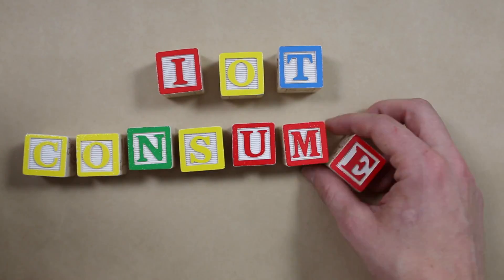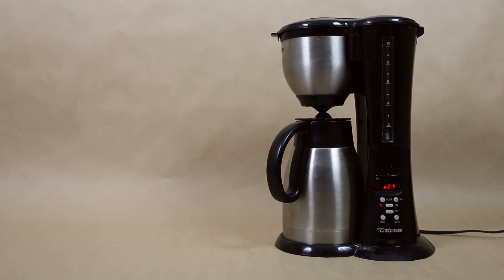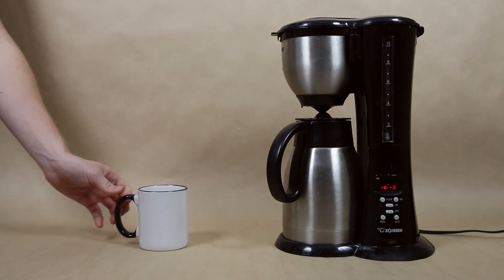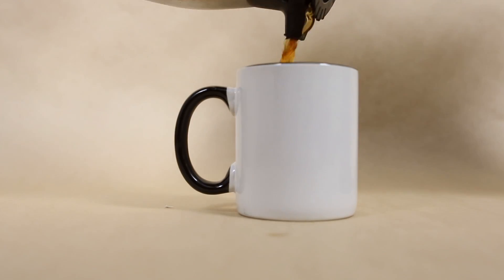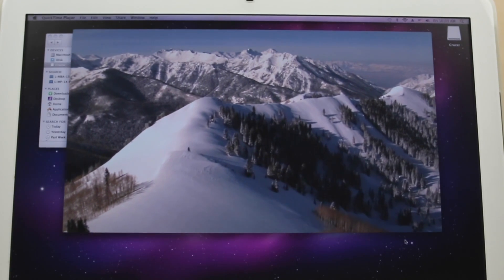But the Internet of Things can be so much more than consumer devices. Because as much as this is a technology for the guy who wants a smart coffee maker to know when he wakes up in the morning, it's also a technology for people who are totally psyched about the natural world and want to understand everything about it.